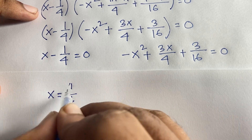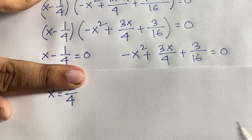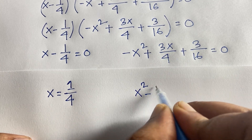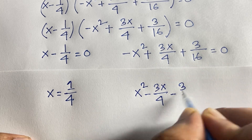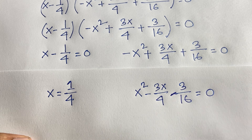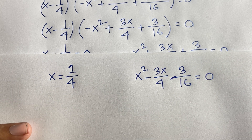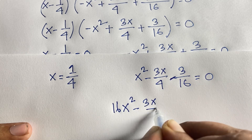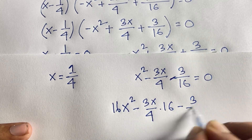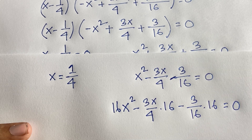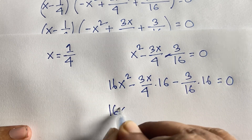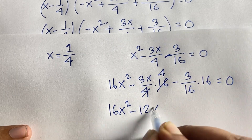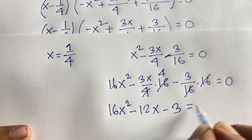For Case 2, I multiply both sides by minus 1 to get x squared minus 3x over 4 minus 3 over 16 equals 0. Then I multiply both sides by 16: 16x squared minus 16 times 3x over 4 minus 3 over 16 times 16 equals 0. Simplifying: 16x squared minus 12x minus 3 equals 0.